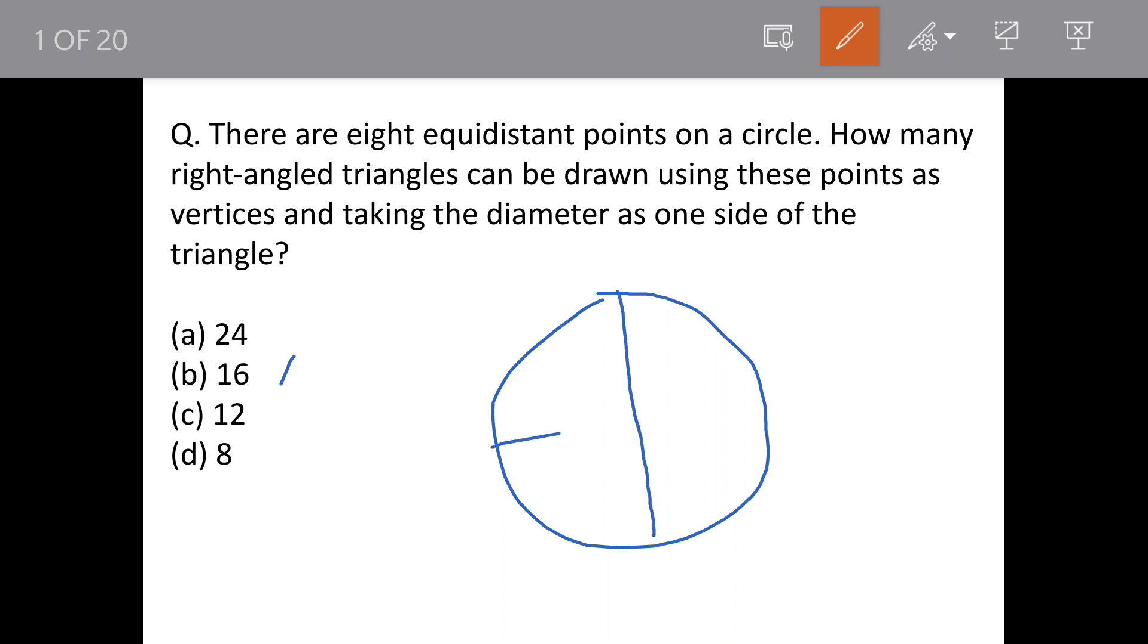This is a circle with four parts, each angle is 90 degrees. When we divide this further into eight parts, we get eight equidistant points.